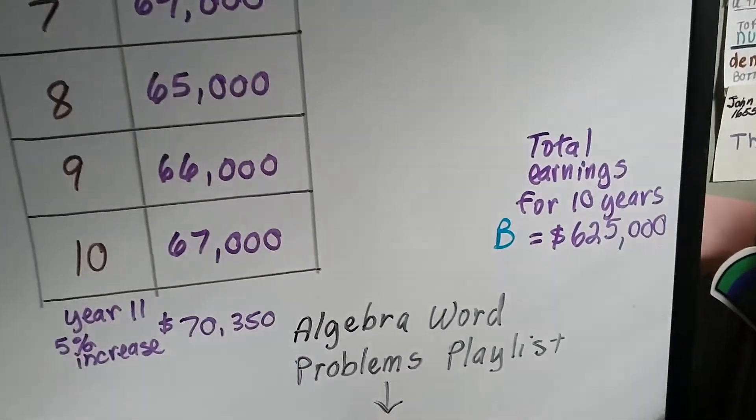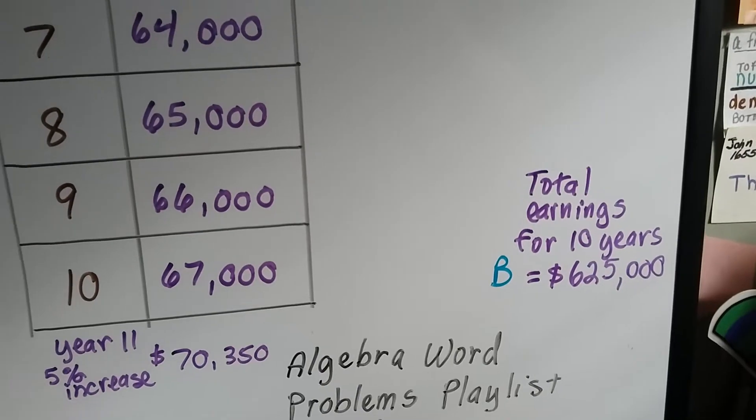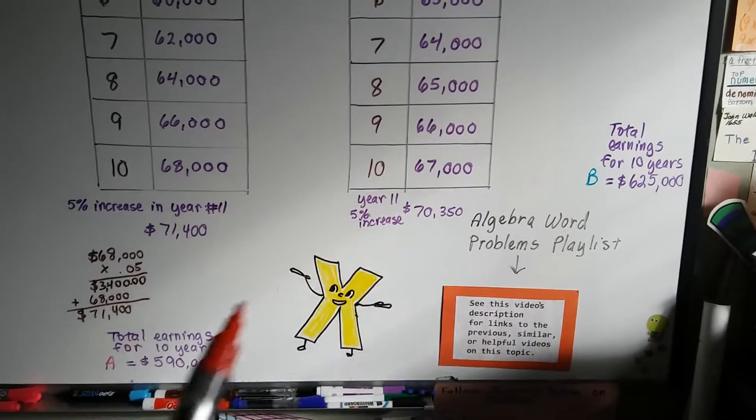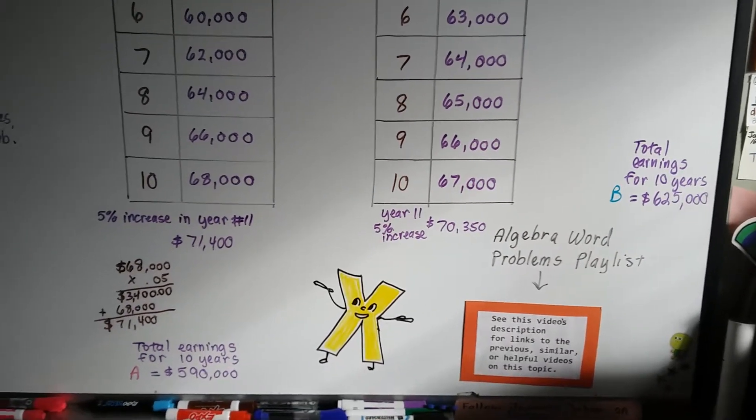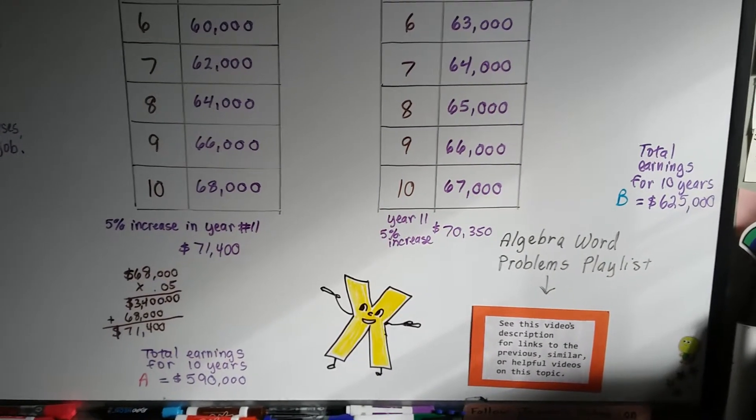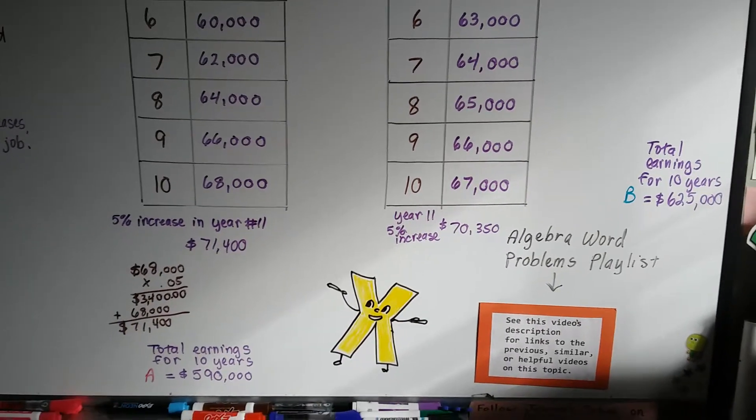Look at the difference. There's a $30,000 difference between the two jobs. This one would end up paying more over 10 years than this one by $30,000. So, she might be smarter to take this one, right?